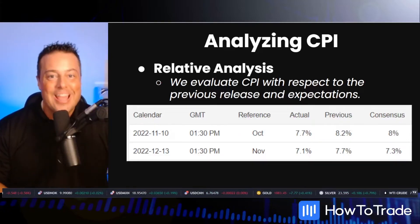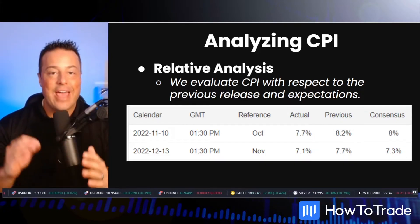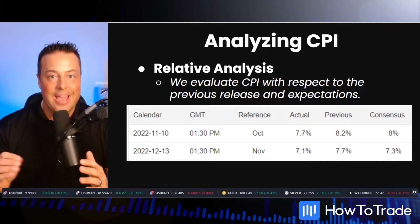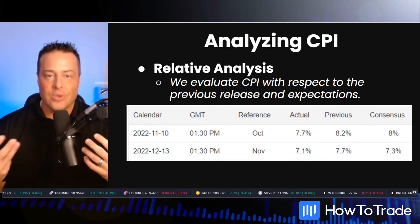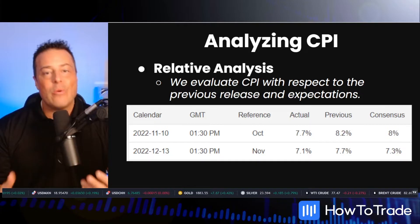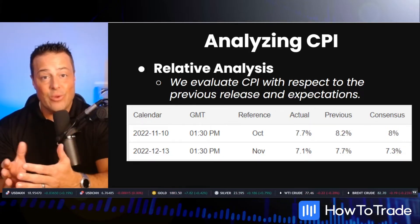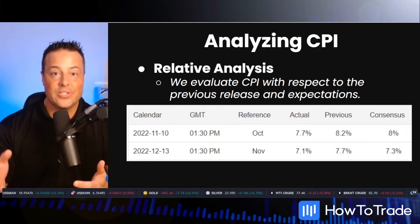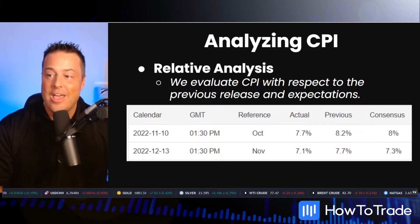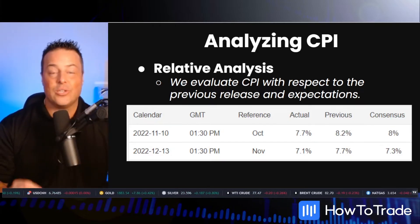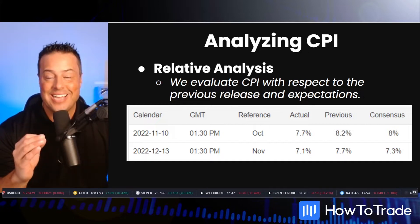Thank you, Connor. Now that we know what CPI is, we can talk a little bit about how to analyze CPI in the live market. To do so, we use a device called relative analysis. Relative analysis is where we evaluate a factor with respect to its previous release and expectations. In the case of CPI, we evaluate CPI with respect to its previous release and market expectations.